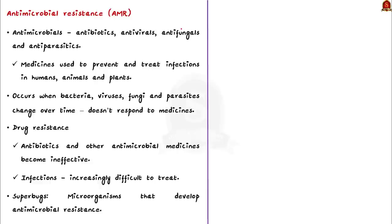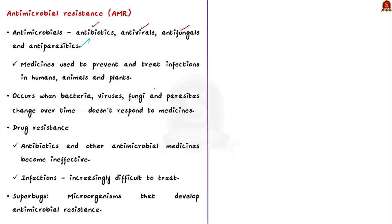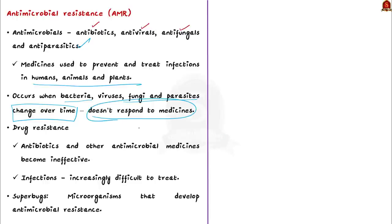Antimicrobials include antibiotics, antivirals, antifungals and antiparasitics — medicines used to prevent and treat infections in humans, animals and plants. Antimicrobial resistance, or AMR, occurs when bacteria, viruses, fungi or parasites change over time and no longer respond to medicines, creating resistance to antimicrobial drugs. This makes infections harder to treat, increases the risk of disease spread, and leads to severe illness and deaths. Antibiotics and other antimicrobial medicines become ineffective, making infections increasingly difficult or impossible to treat. Microorganisms that develop such resistance are sometimes referred to as superbugs.